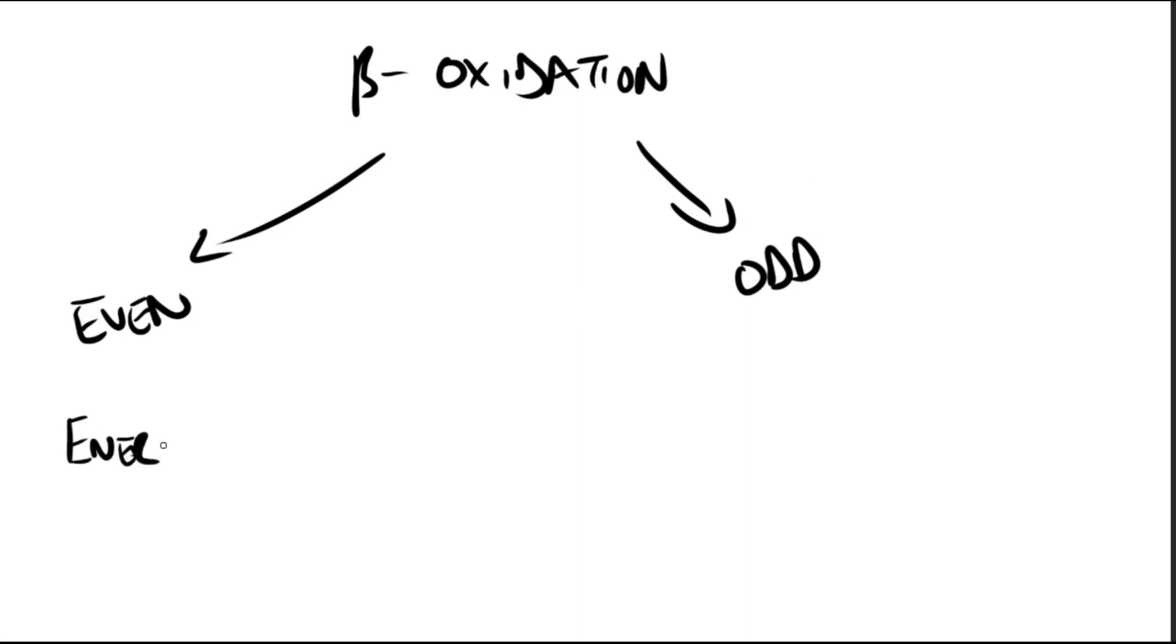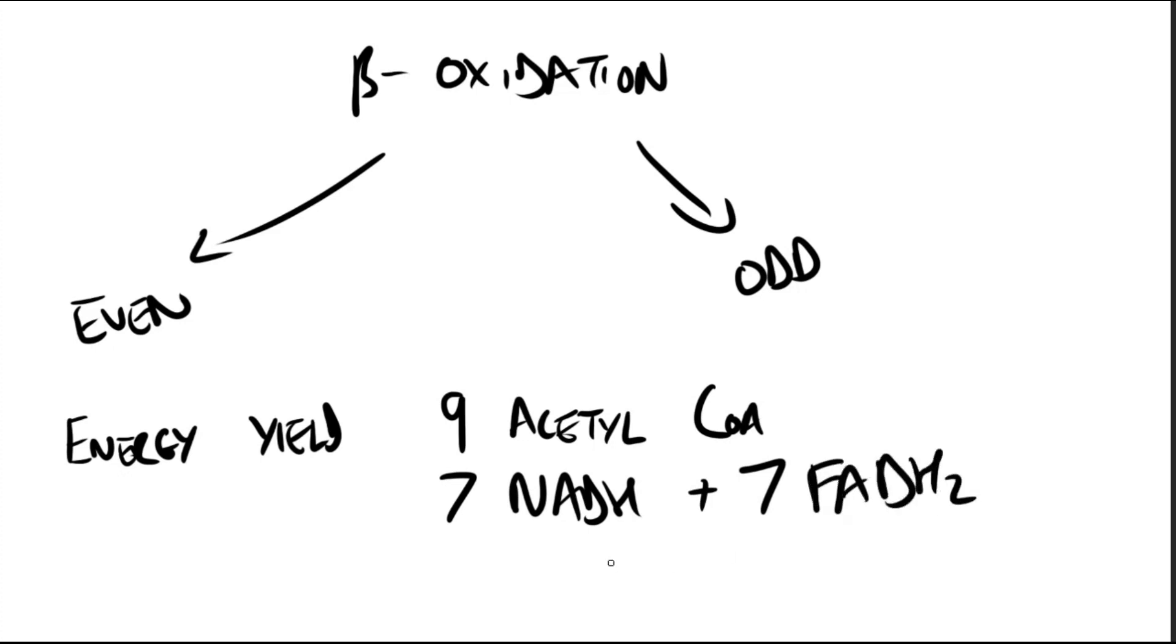The oxidation of a molecule of palmitoyl coenzyme A to carbon dioxide and water produces nine acetyl coenzyme A's and seven NADH and seven FADH2, from which we get 131 ATPs. Activation of the fatty acid requires two ATPs, so that is a deduction.